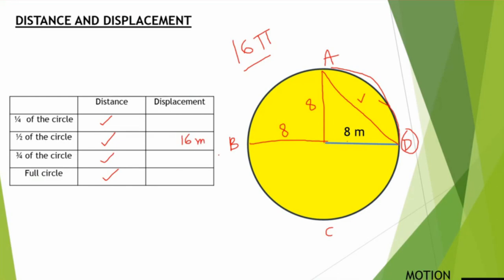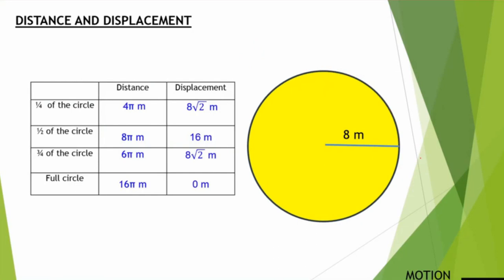Don't forget the units — if you forget units in your question paper, you'll lose half marks. For three-fourths of the circle, the person reaches point C. Connecting the start and end points, with each radius being 8 meters, we find the hypotenuse just as we did for point A. For the full circle, the person returns to position D, and since the initial and final positions are the same, the displacement is 0 meters.